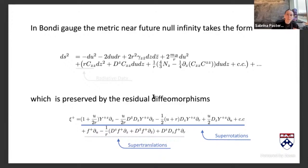So lesson one: there are an infinite number of symmetries. From my perspective this comes from the bulk by co-opting BMS's work, but one could also derive it purely at the boundary. Lesson two will be that these are symmetries of the S-matrix.